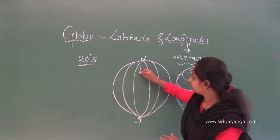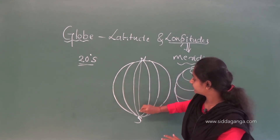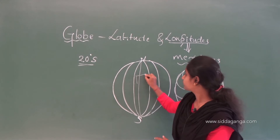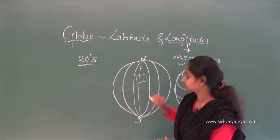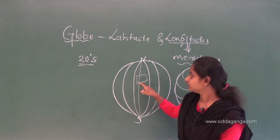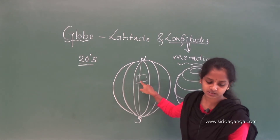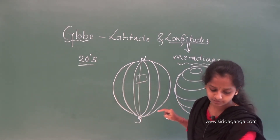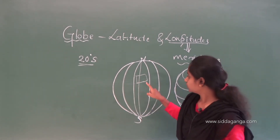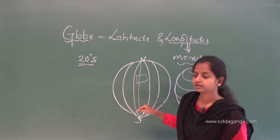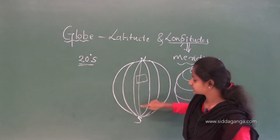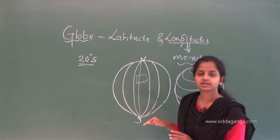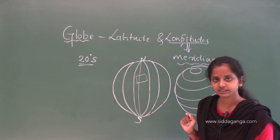This meridian is called the prime meridian. Its value is 0 degrees longitude. From it, we count 180 degrees eastward as well as 180 degrees westward. They took the meridian which passes through Greenwich — where the British Royal Observatory is located — and called it the prime meridian.